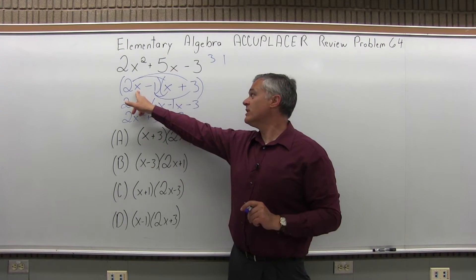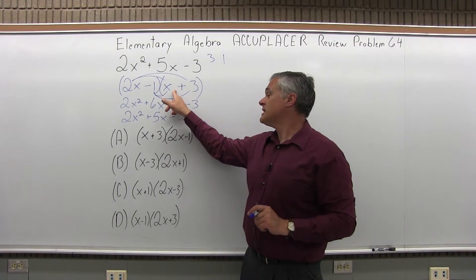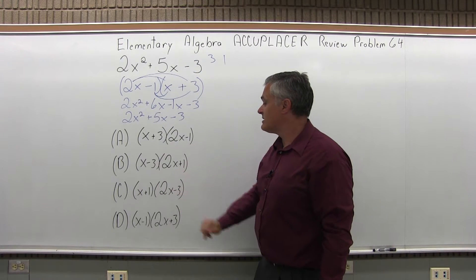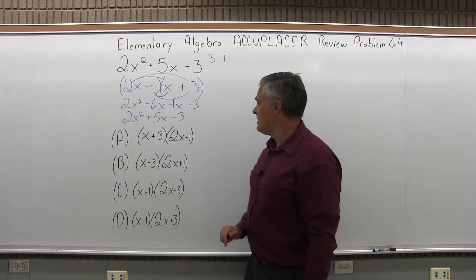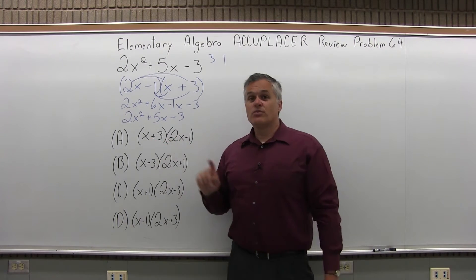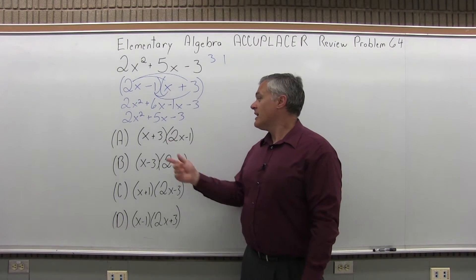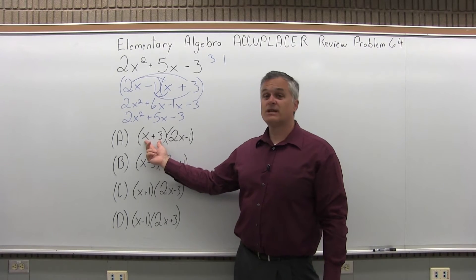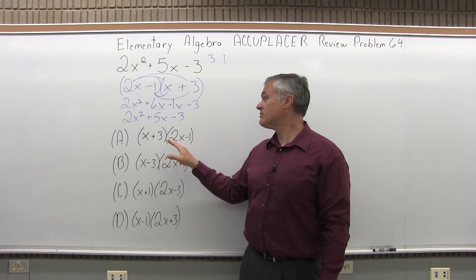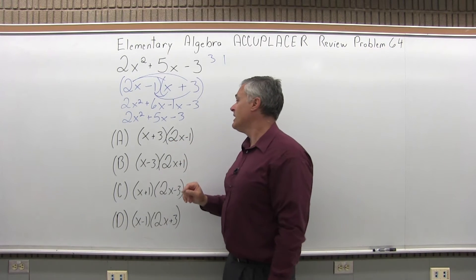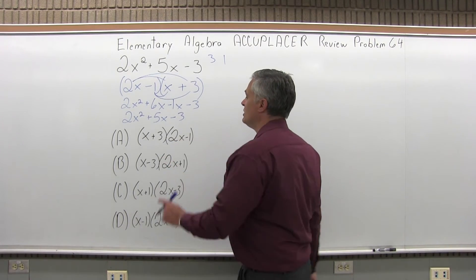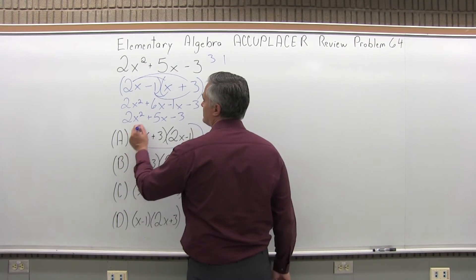So my factoring was 2x minus 1 times x plus 3. Now as I go through my list of options, I do have a match with A. Notice the order of the parentheses is different. That's okay. Putting the x plus 3 as the first set of parentheses or the second set of parentheses is really the same answer. It's being multiplied. You could arrange the parentheses in either order, as long as the minus 1 is in the same parentheses as the 2x. So option A is the answer.